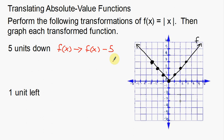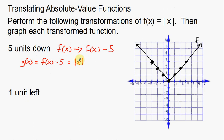If you don't quite understand how to transform or translate functions, I do have previous videos on that — you can search for those. So my new function, g of x, is the old function f of x but with 5 subtracted from it. The old function is just the absolute value of x, so g of x is equal to the absolute value of x minus 5.